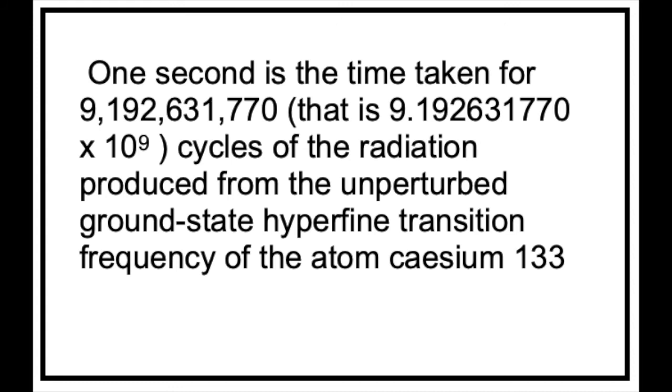And so, for a less than memorable precise definition, one second is the time taken for 9,192,631,770 cycles of radiation produced from the unperturbed ground state hyperfine transition frequency of the atom caesium-133. A definition only really necessary for those who need to be fantastically precise.